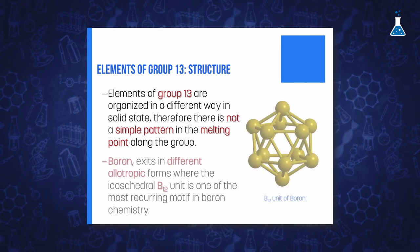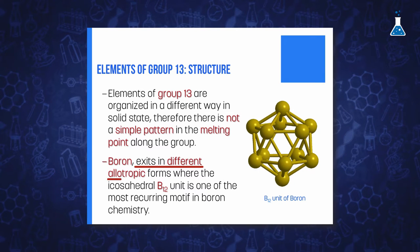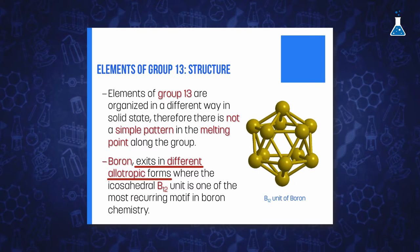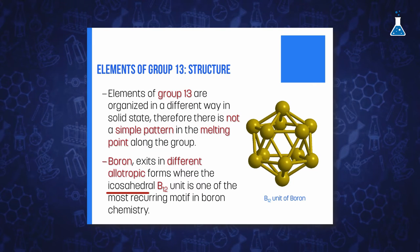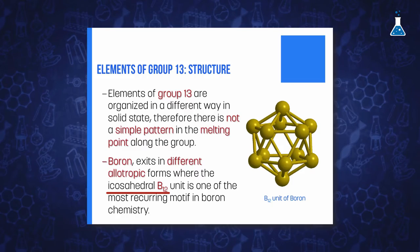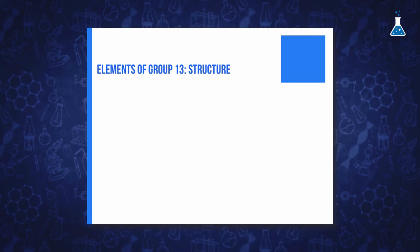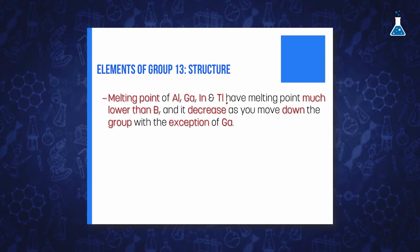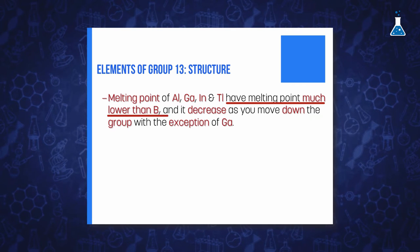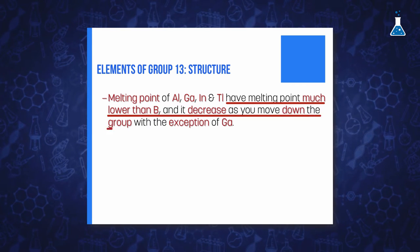For instance, Boron exists in different allotropic forms and structures. One of these structures that appears in various boron allotropes is the B₁₂ icosahedron. This arrangement consists of an icosahedral cluster of 12 boron atoms, a building block that explains the high melting point of the element and makes boron an important refractory material. This is not comparable with aluminium, gallium, indium, and thallium, which have melting points much lower than boron and which tend to decrease with increasing atomic number.